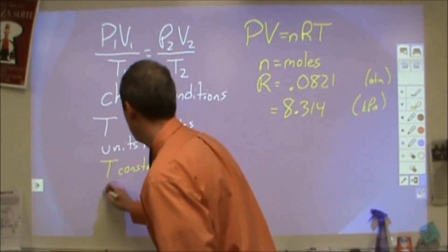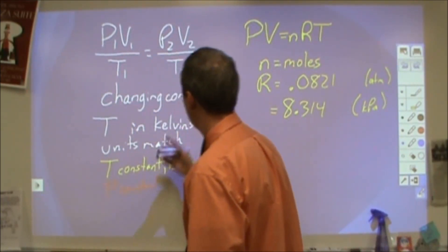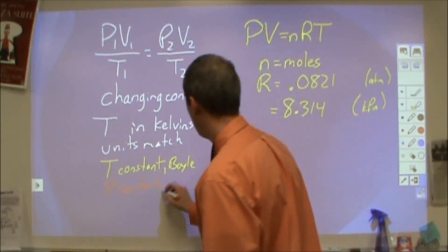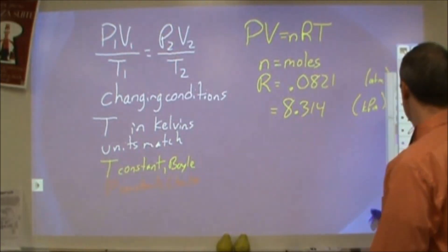If your pressure is constant, then pressure will drop out of that equation, you'll get V over T equals V over T. Now you're looking at Charles's law. If volume is constant, you'll end up with Gay-Lussac's law.